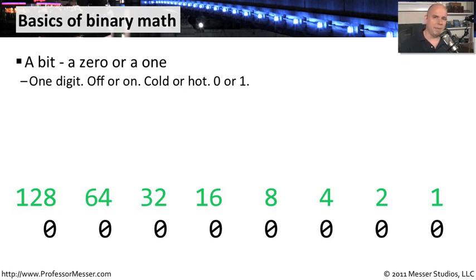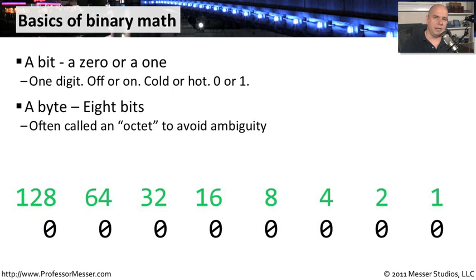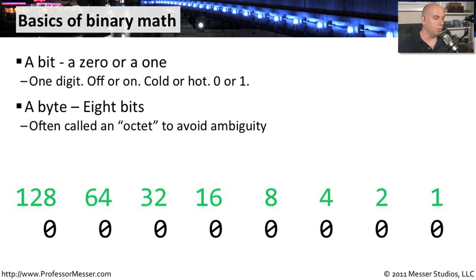The first thing to remember is that a binary bit is either zero or one — it can't be anything else. It's either hot or cold, on or off. We also combine these bits together into groups of eight, and those groups of eight we often refer to as a byte. You might also hear this referred to as an octet, which removes some ambiguity, since on most computing systems — Windows, Macintosh, or Linux — they're going to have eight-bit bytes, or octets.